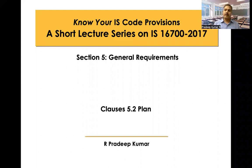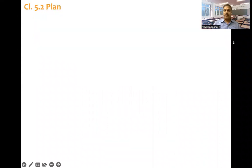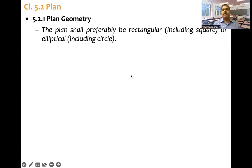Clause No. 5.2, Plan. What code says is plan geometry: the plan shall preferably be rectangular, including square, or elliptical, including circle.